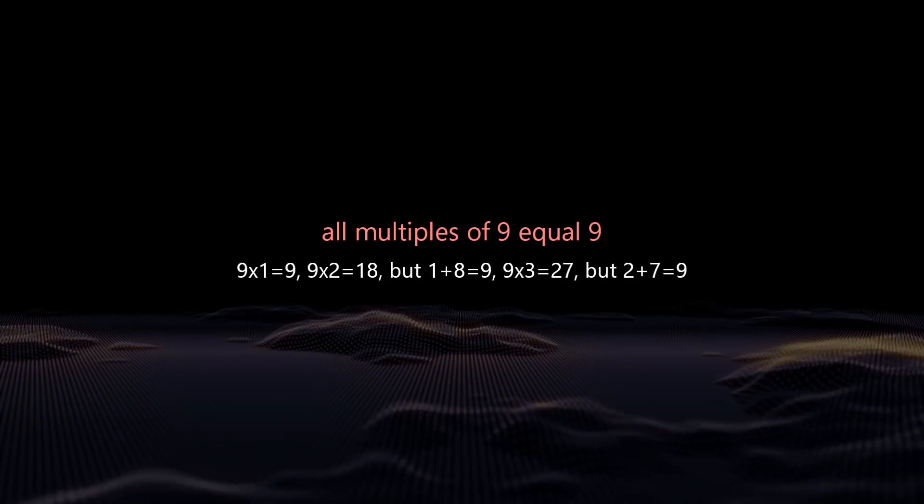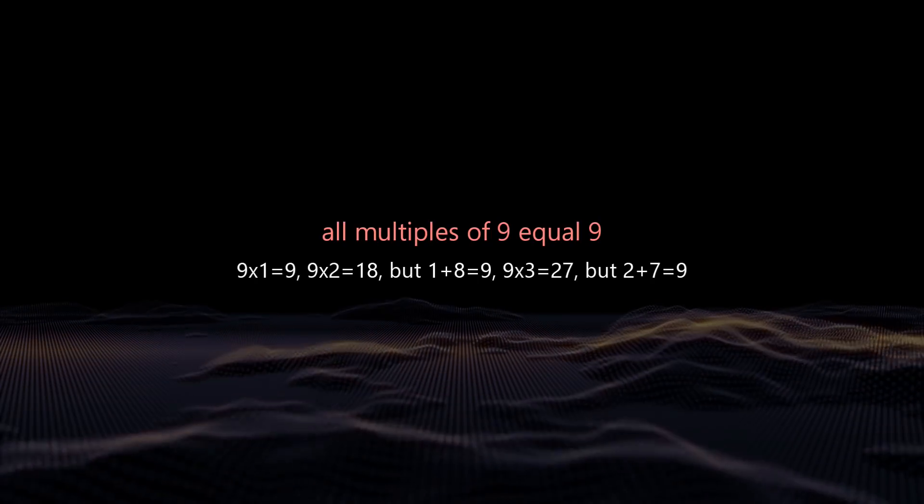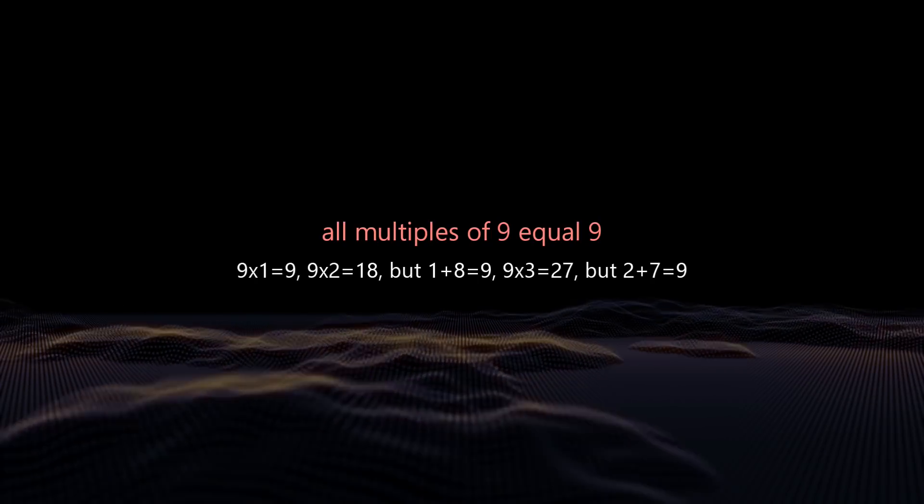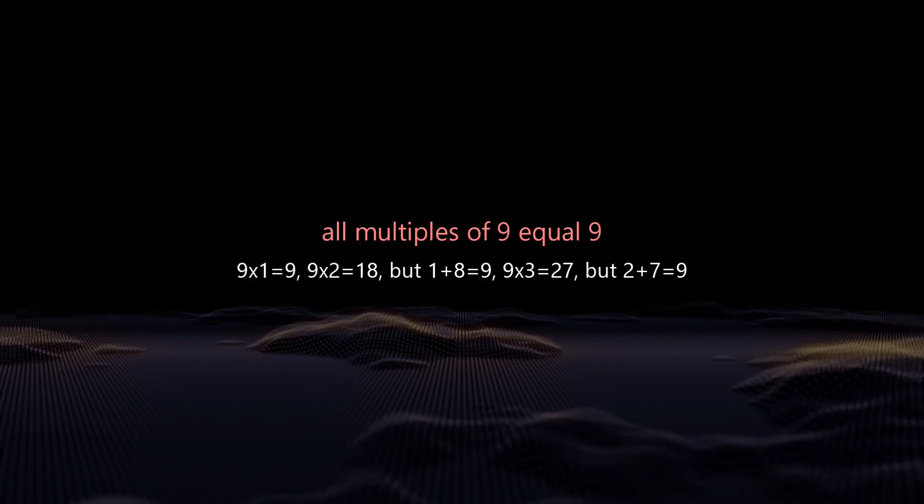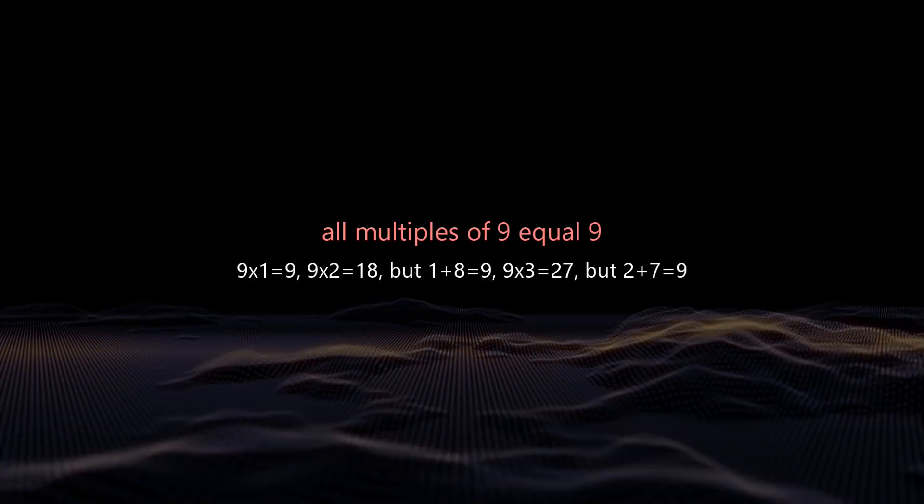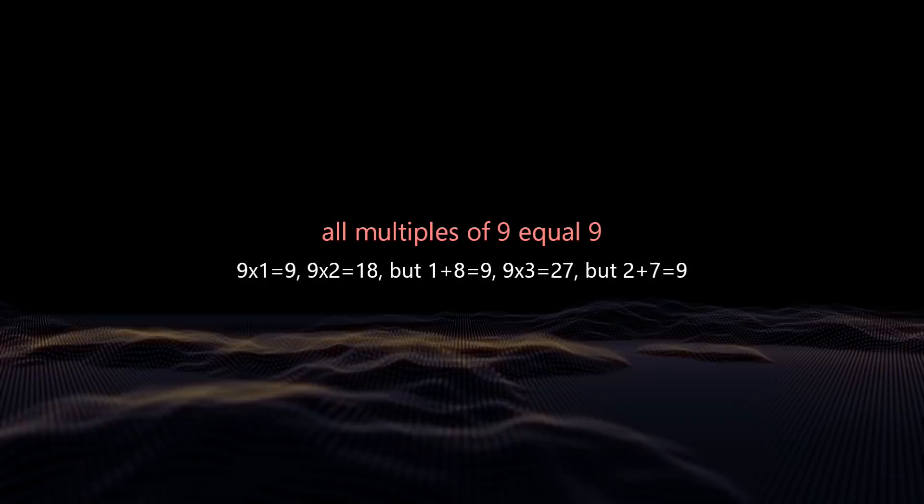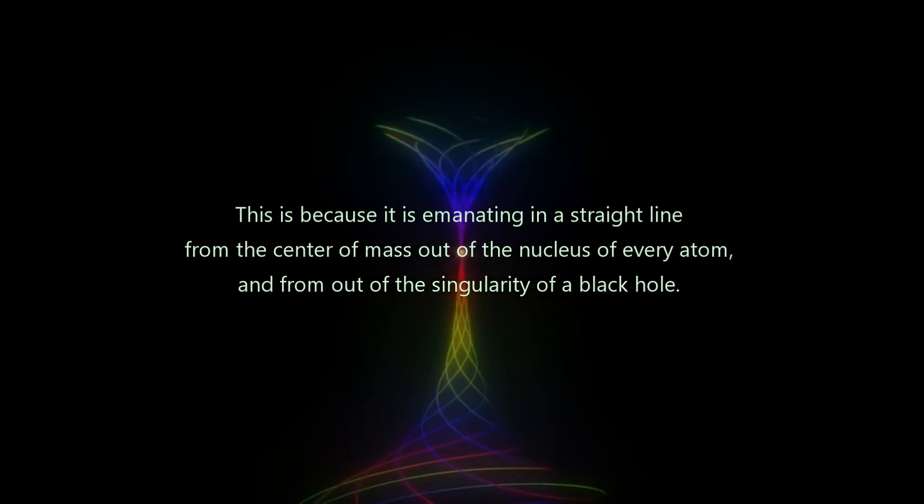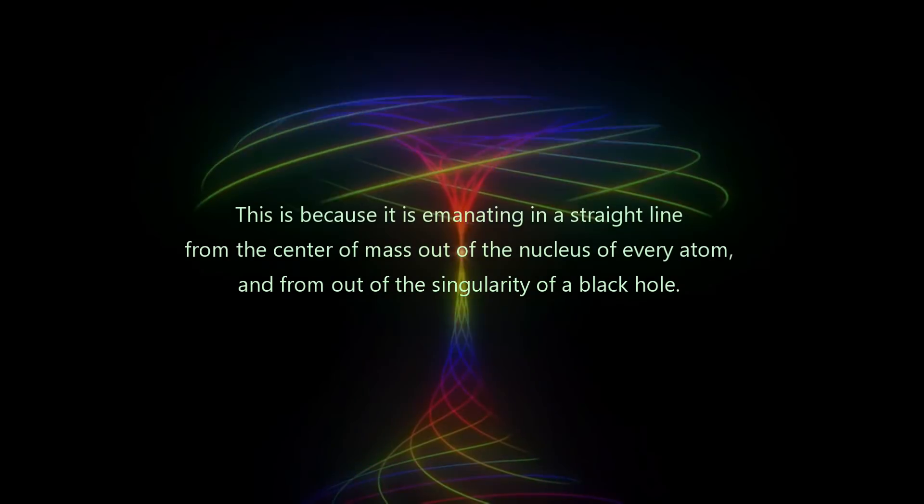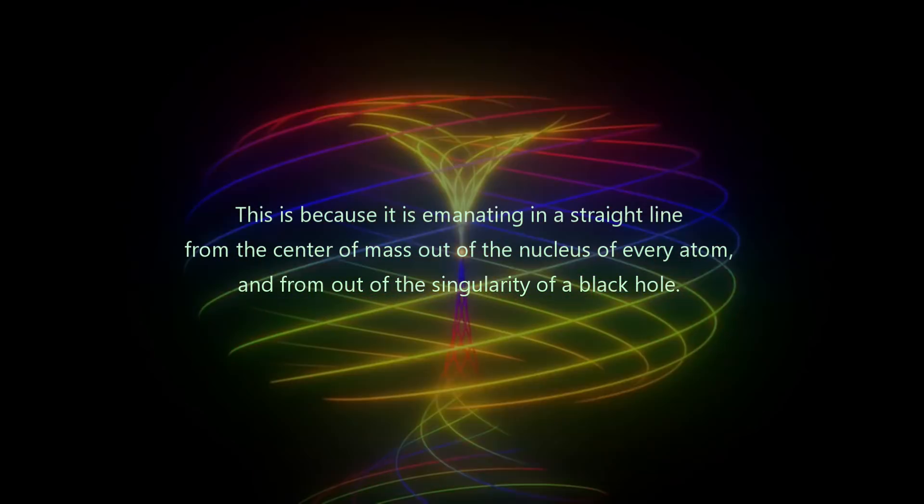The number 9 never changes and is linear. For example, all multiples of 9 equal 9. 9 times 1 equals 9. 9 times 2 equals 18. But 1 plus 8 equals 9. 9 times 3 equals 27. But 2 plus 7 equals 9.